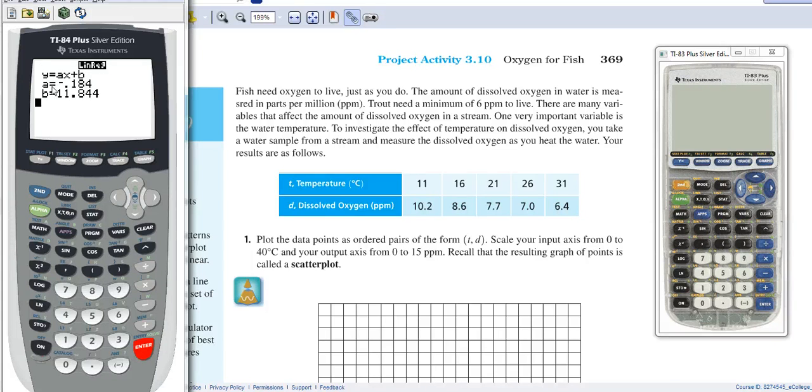And so here is our regression equation, where A is our slope, and B is our vertical intercept. And so this is telling us that at negative 0.184 parts per million per temperature, so as the dissolved oxygen, for every temperature of increase, as the temperature increases by one degree, the amount of dissolved oxygen decreases by 0.184 parts per million.